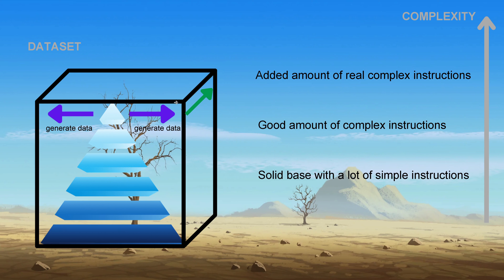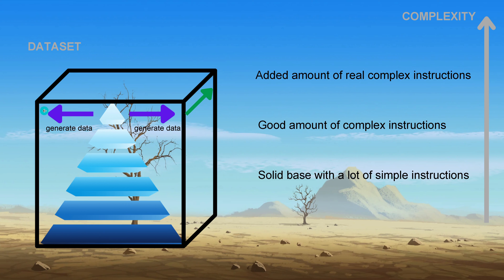Here is a simple oversimplification: we have a basic pyramid dataset where, at the top, we only have a very limited amount of training data for really complex instructions. What we have to do is take this pyramid dataset as our base, and additionally generate synthetic data so that at the top level we also have data. We want the amount of data at each complexity level to be about the same - so we synthetically generate this dataset.